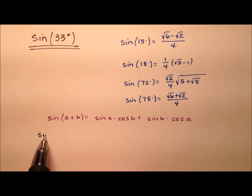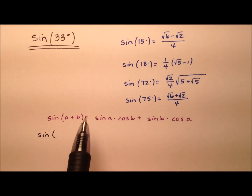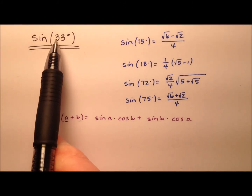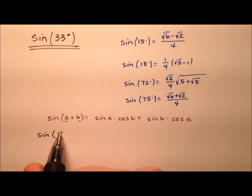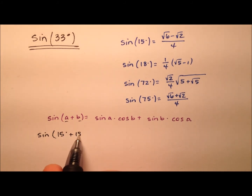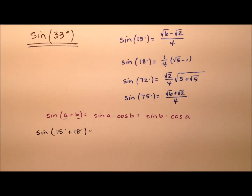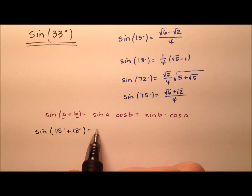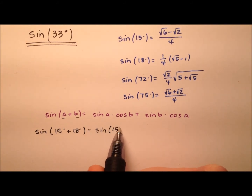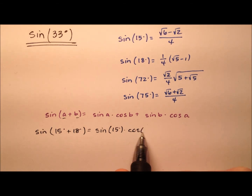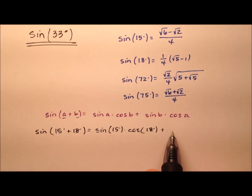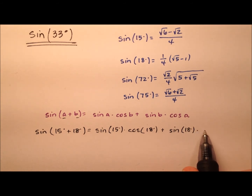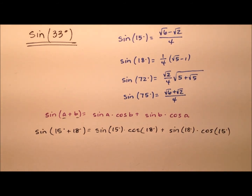I'm going to use the sine of two angles that add to make 33 degrees, so I'm going to use 15 degrees and 18 degrees. When I expand this, it'll be the sine of 15 degrees times the cosine of 18 degrees, plus the sine of 18 degrees times the cosine of 15 degrees.